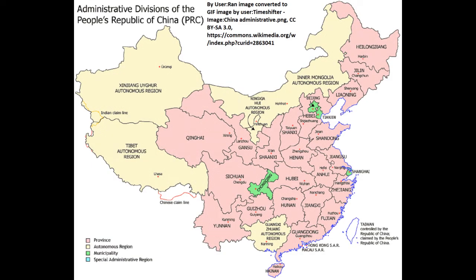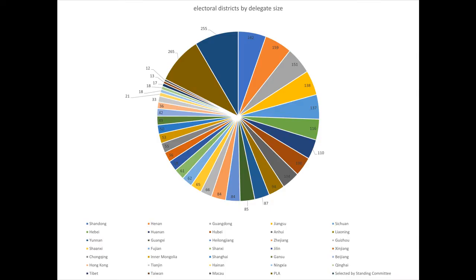The number of delegates from each of these electoral districts will vary depending on the populations of the district, and also how the CCP values them. 34 of the districts are based around geographic entities — the 22 provinces controlled by the People's Republic of China, 5 autonomous regions, 4 municipalities, 2 special administrative regions, and even though it is not controlled by the PRC, Taiwanese people found throughout China are also represented by their own delegation of 13 delegates. Shandong sends the most delegates out of these geographic entities, with 162 delegates. Macau sends the least, with only 12 members.